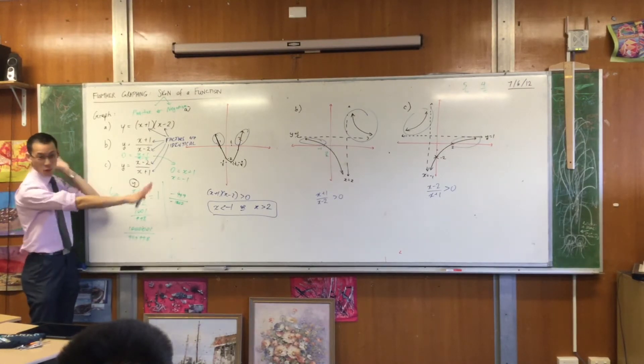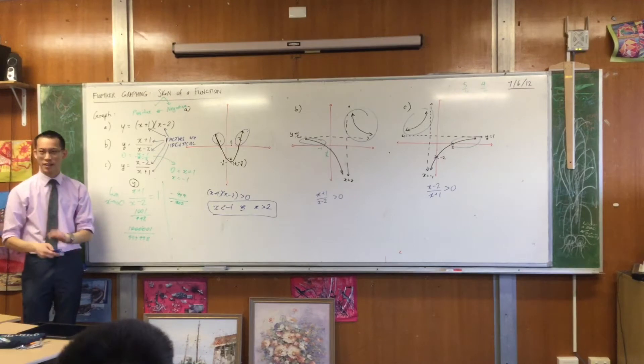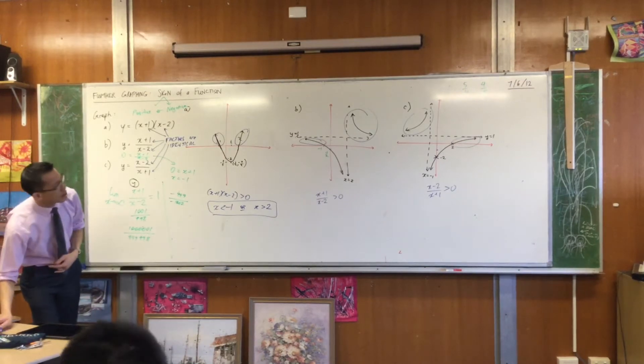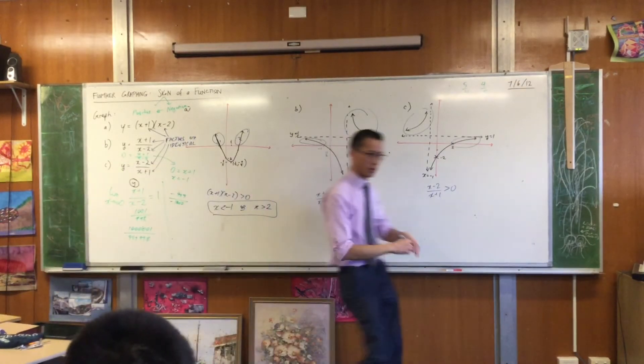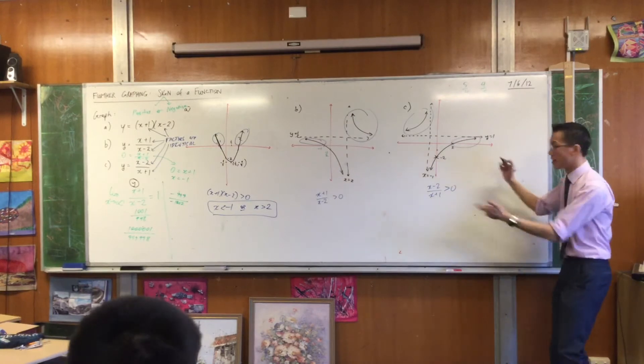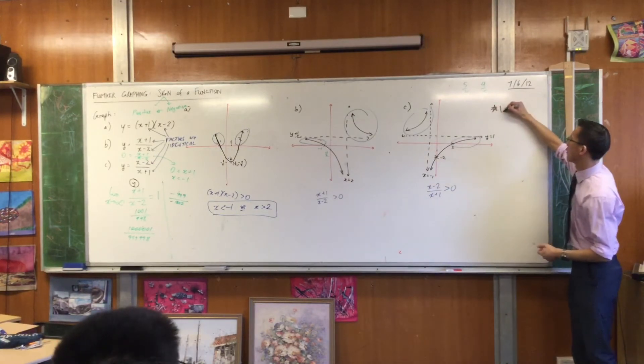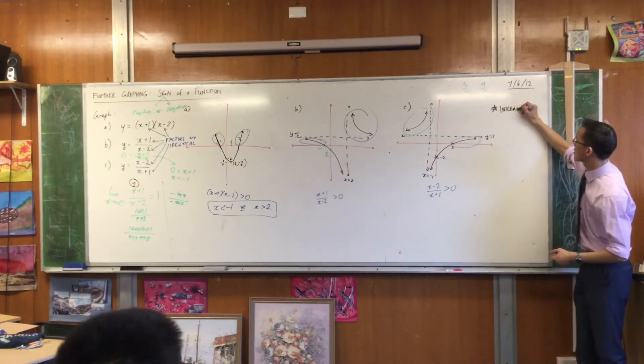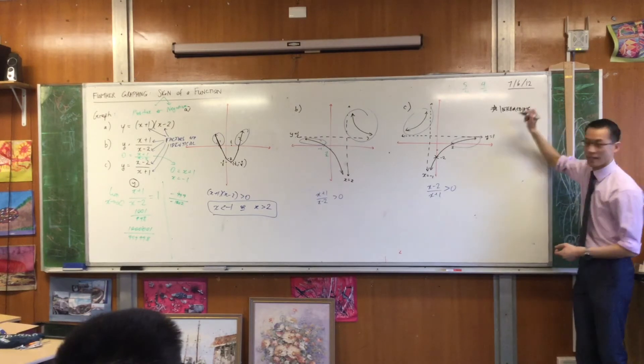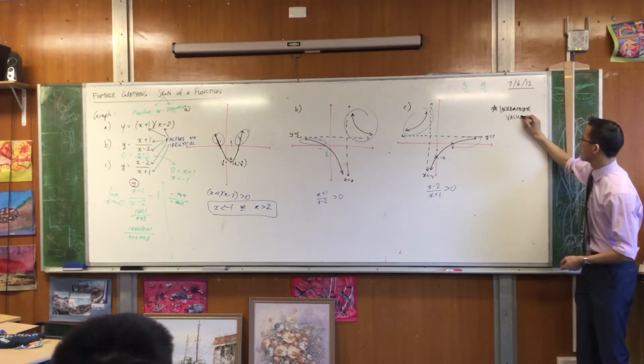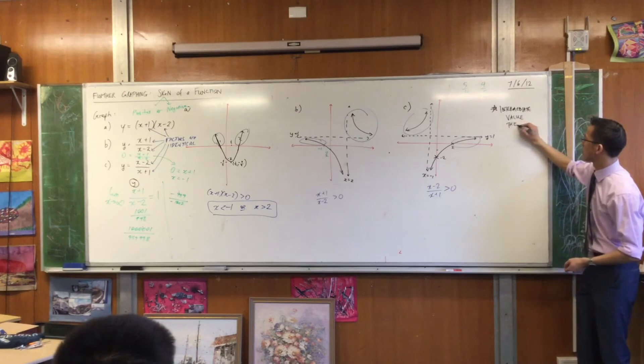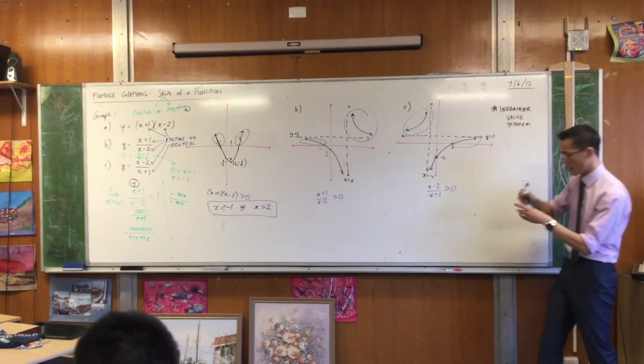So, underneath where you've drawn these graphs, I need to rub off some space, so give me a second. I want you to make a subheading, I'll write it over here because it's such a weird sort of phrase, that explains this. The subheading is, bit of a mouthful, the intermediate, as in between, the intermediate value theorem. Can you make that subheading while I rub off some space?